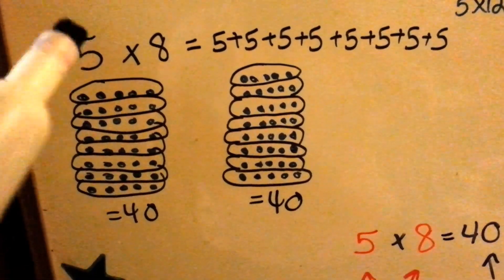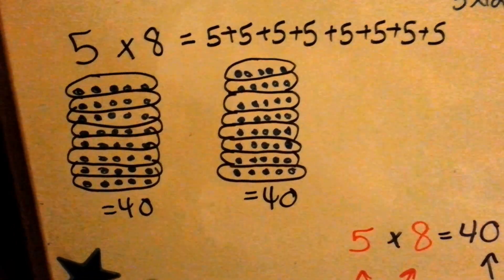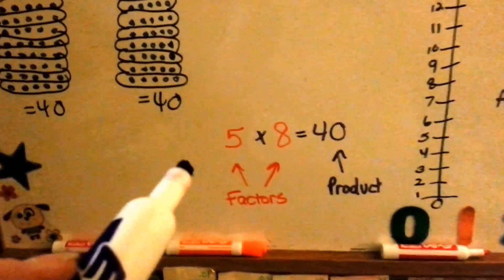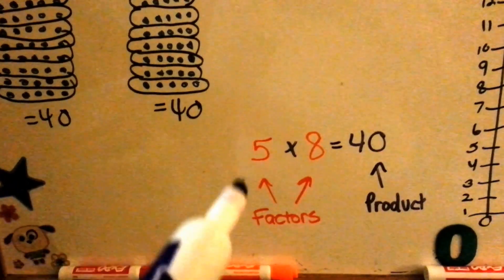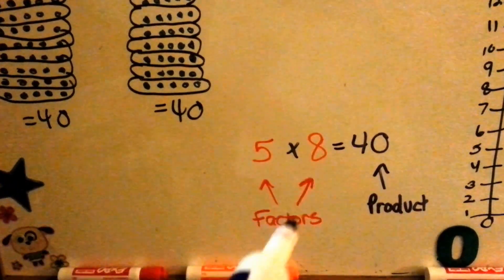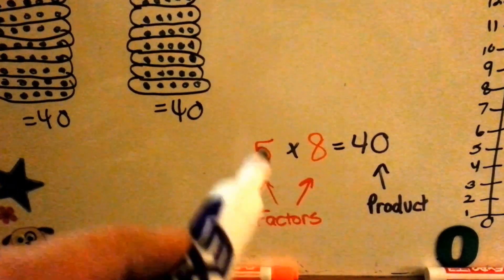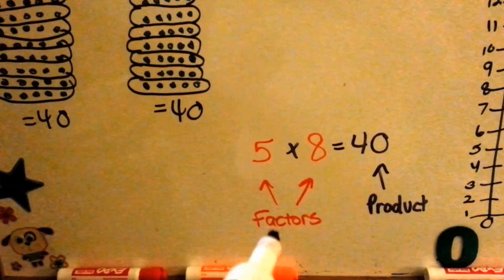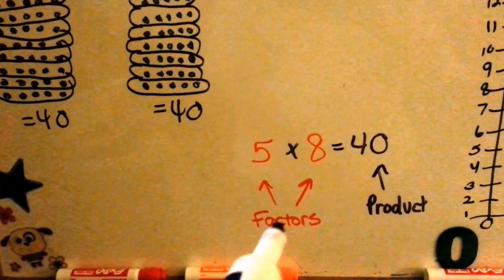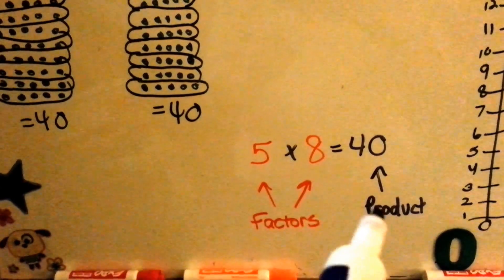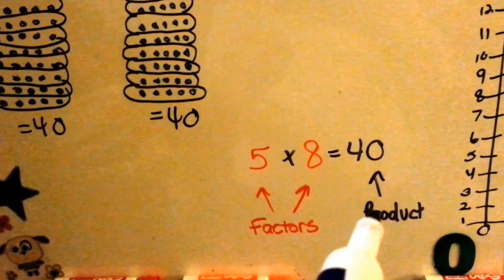It's a lot easier to do it this way. The numbers that you multiply together are called factors. The answer is called a product.